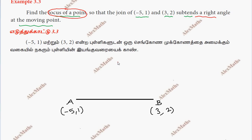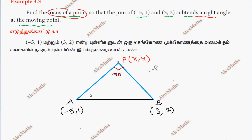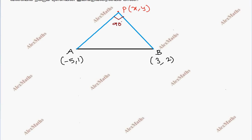The moving point is supposed to be point P with coordinates (x, y). If the join AB subtends a right angle at P, then angle APB equals 90 degrees. So this is the condition — the right angle is at P. We use the Pythagorean relation, so AB is the hypotenuse.